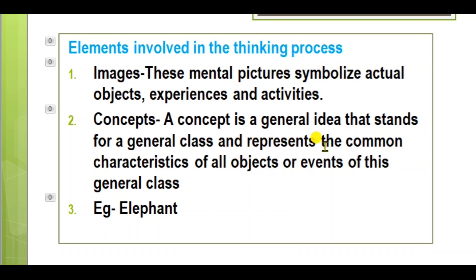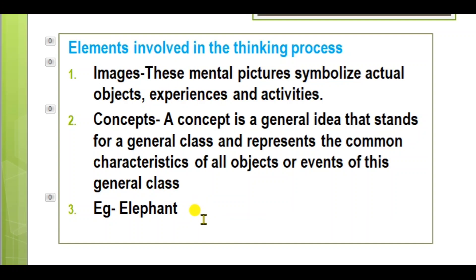The next element is concepts — actual objects that stand for a general class and represent the common characteristics of all objects or events of that general class. Concepts give us a general idea. For example, you have a concept of an elephant in your mind. So elements so far: images and concepts.